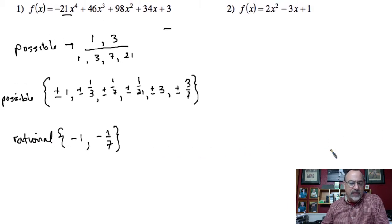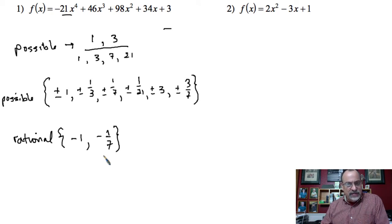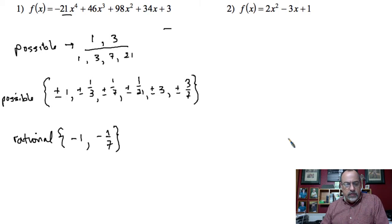After checking all values, it turns out negative 1 gives a remainder of zero and negative 1 seventh also gives a remainder of zero. These are the only rational zeros. Again, they're not necessarily all of the zeros, but by using the remainder theorem I was able to determine these without synthetically dividing every single case.